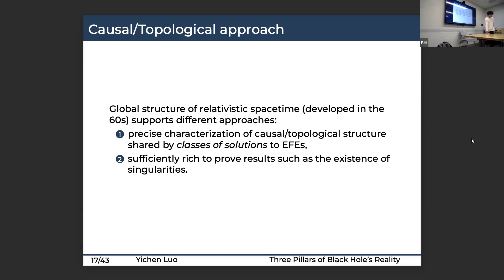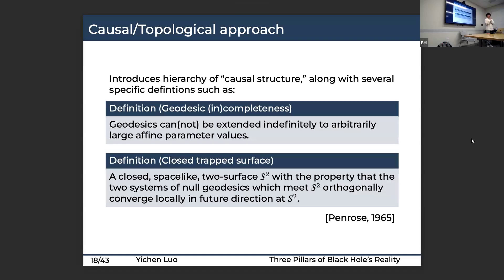This question motivates the second pillar: the causal topological approach. It was invented to study the global structure of spacetime, developed especially in the 1960s, and supports very different approaches. First, it gives precise characterizations of the causal structures shared by different classes of solutions. Second, it is sufficiently rich to prove results such as the existence of singularities. This second pillar introduces a hierarchy of causal structures from chronological to globally hyperbolic structures, and shifts focus to novel concepts.